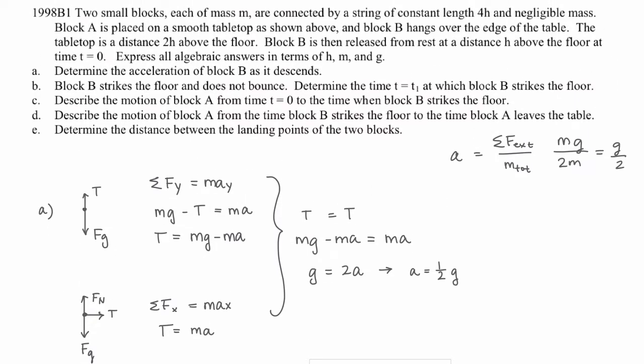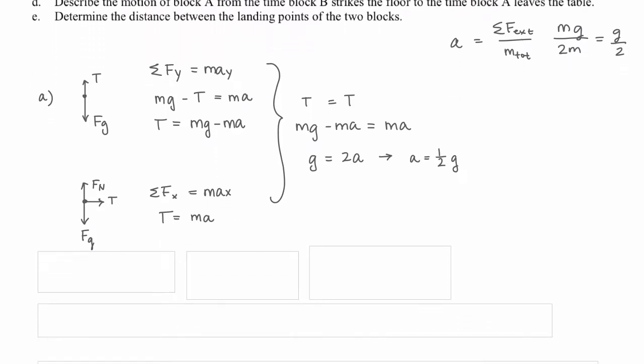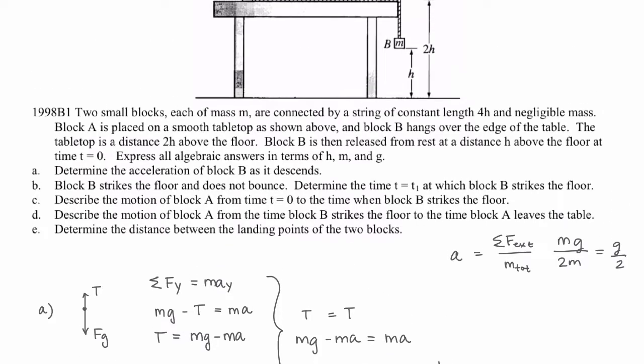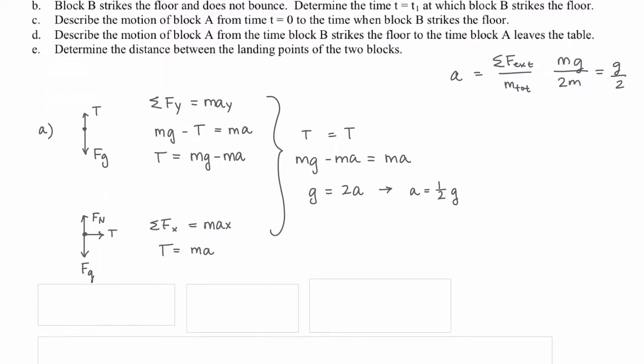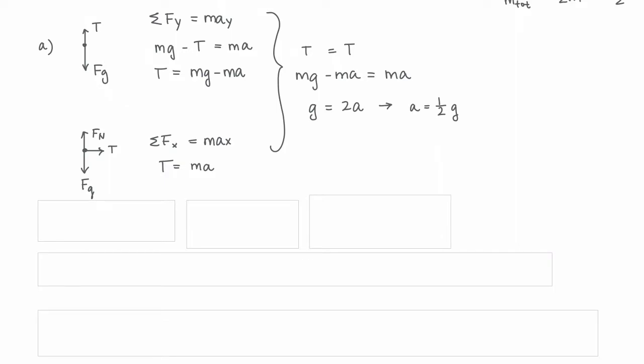Part B: Block B strikes the floor and does not bounce. Determine the time t=t₁ when block B strikes the floor. We know it's accelerating and started at height h. Using a kinematics equation with height, acceleration, and time, we can rearrange for t. We can't use g for acceleration because we found it's half g in part A. Plugging in g/2, the time is the square root of 4h divided by g.